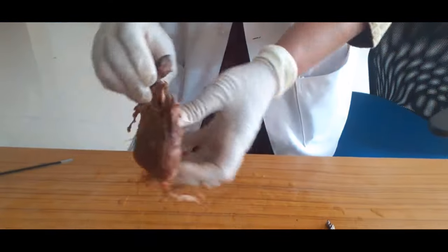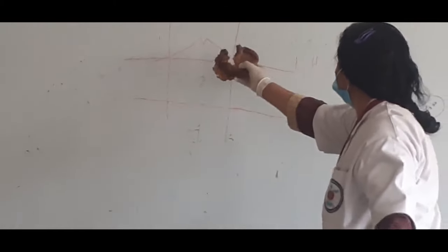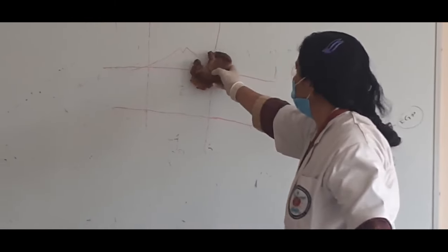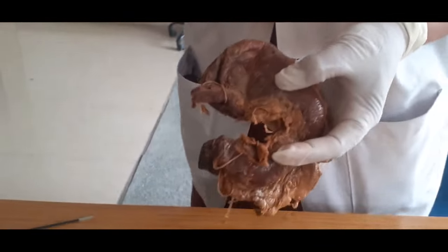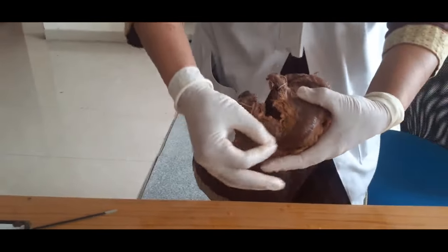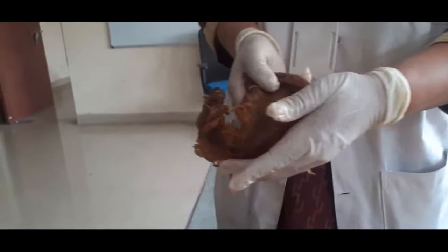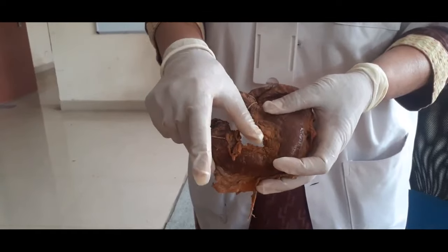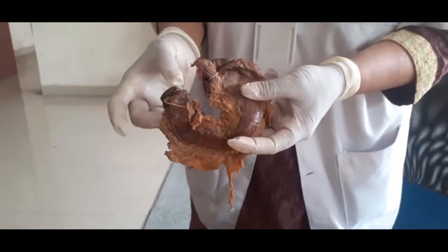Now this is the stomach. It lies in the left hypochondriac, epigastric, and umbilical regions. It has two surfaces: the anterior superior surface and the posterior inferior surface. There are two parts: the cardiac part and the pyloric part. There are two orifices: the cardiac orifice and the pyloric orifice. It has two curvatures: the lesser curvature and the greater curvature.